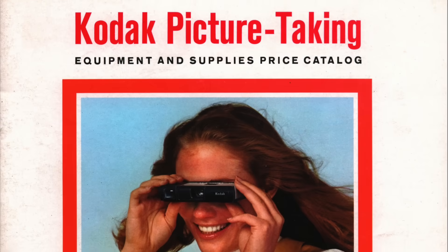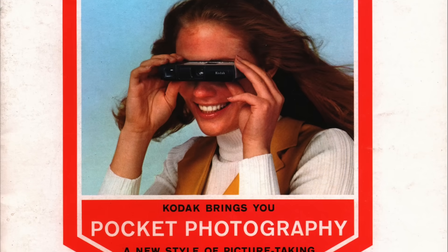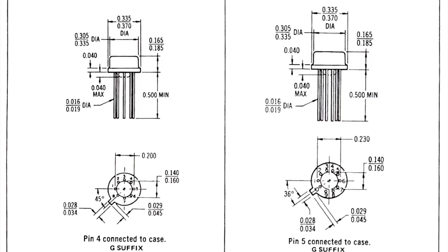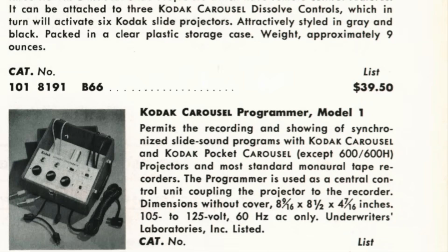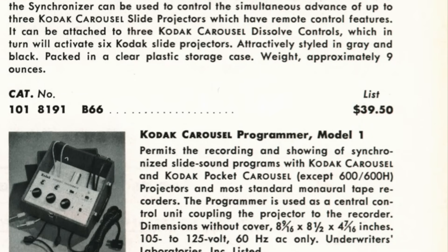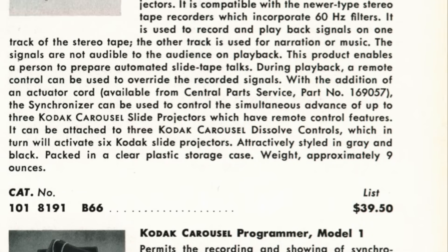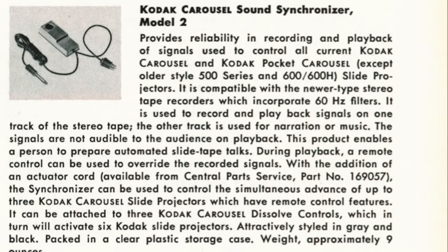I haven't been able to determine exactly when the Model 2 was introduced, though the earliest mention I've found is in a 1972 Kodak product catalog. This makes sense since the integrated circuit it uses, the Motorola MC914G, was first introduced in the late 1960s. As you can see from this catalog page, the Model 1 was still being sold for $132.50, while the Model 2, despite being brand new, sold for only $39.90 — a third of the price.